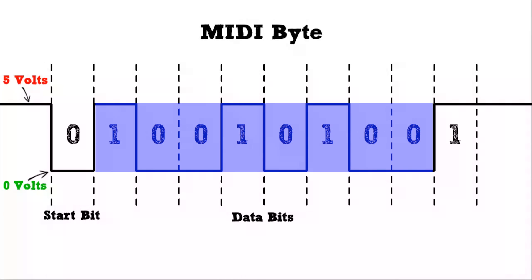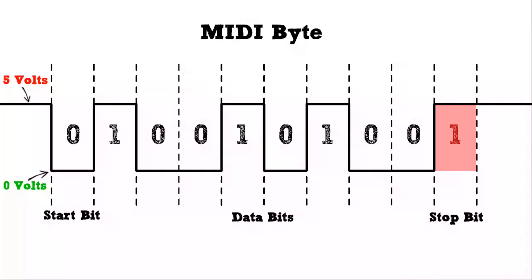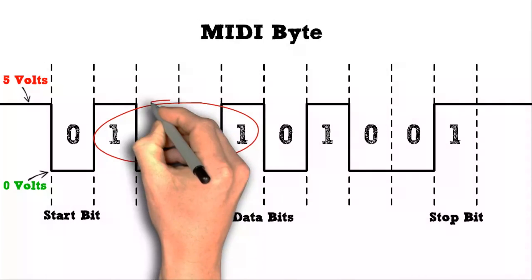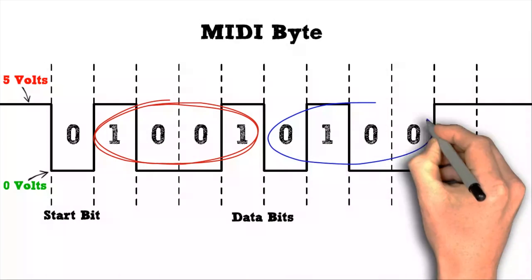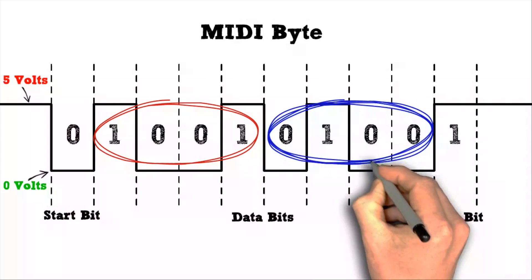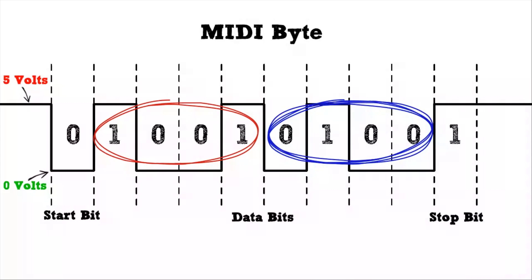Finally it will return the line to the 5-volt state to end the message — this is called a stop bit. This particular message is telling the connected instrument to play a note. The first four bits of the message, 1-0-0-1, is a MIDI code that means note on. The second four bits tell the receiving instrument which channel this command is meant for.